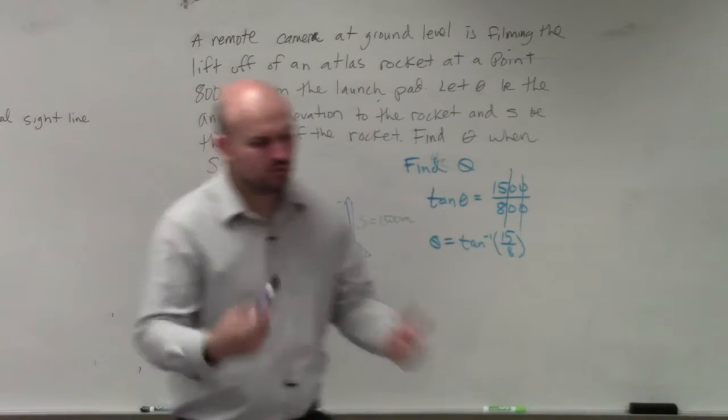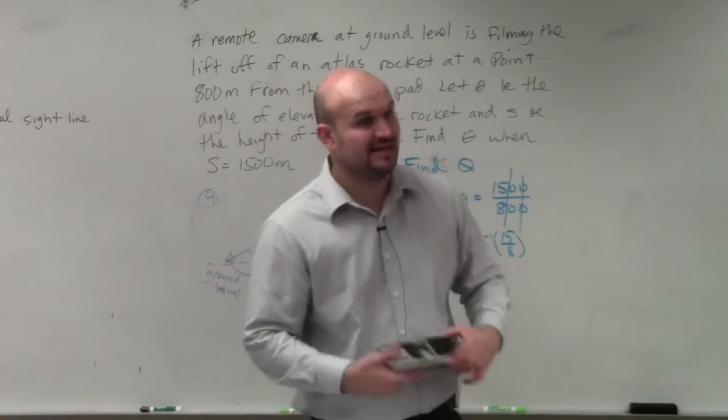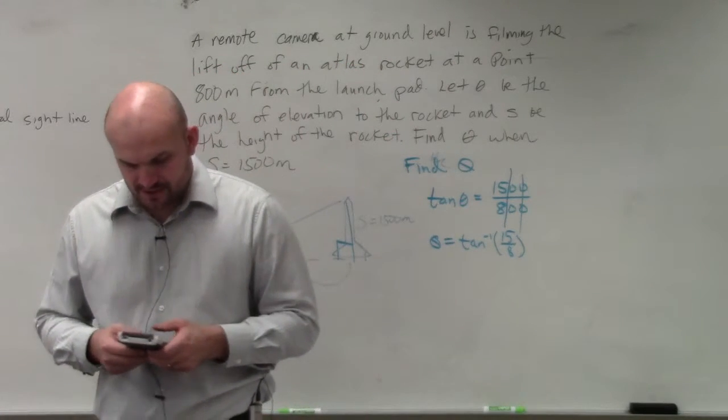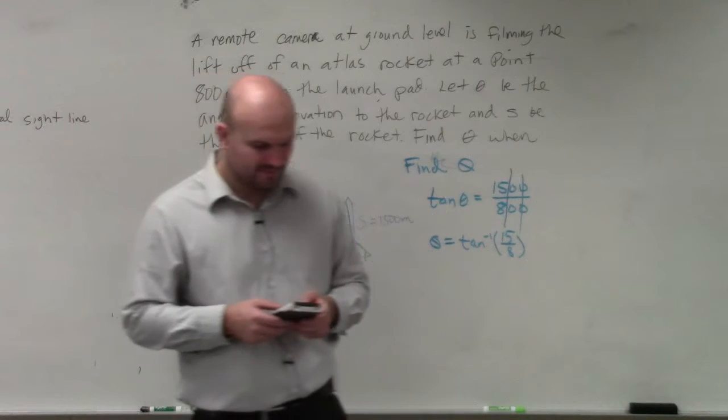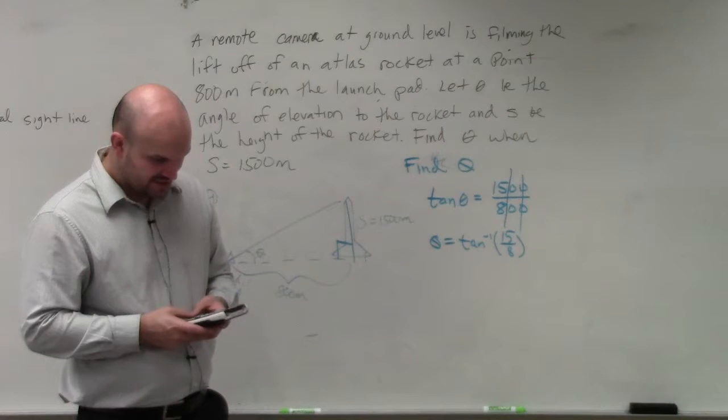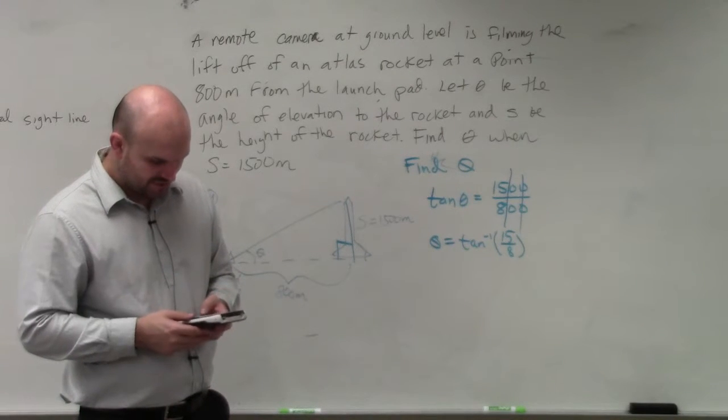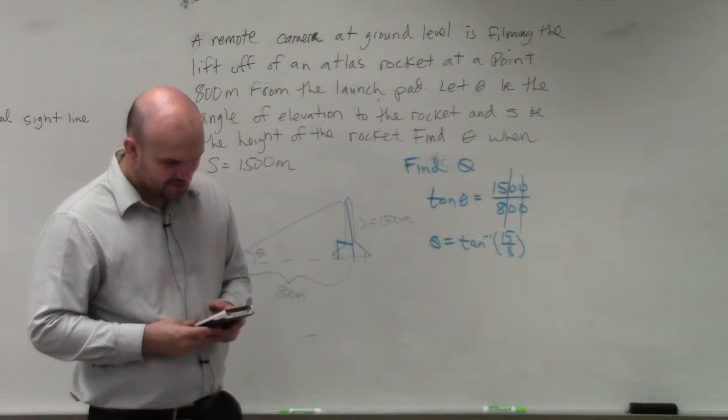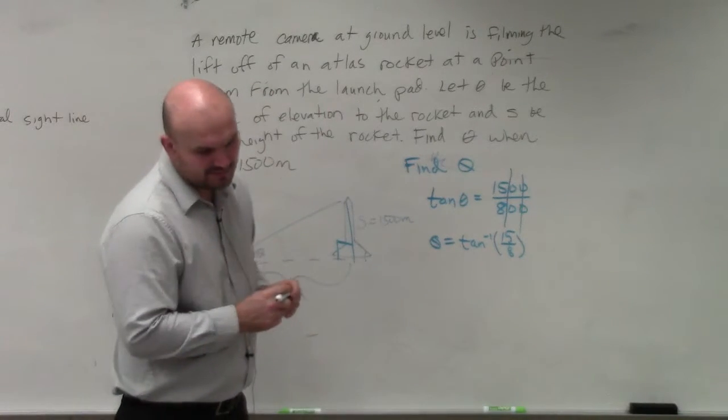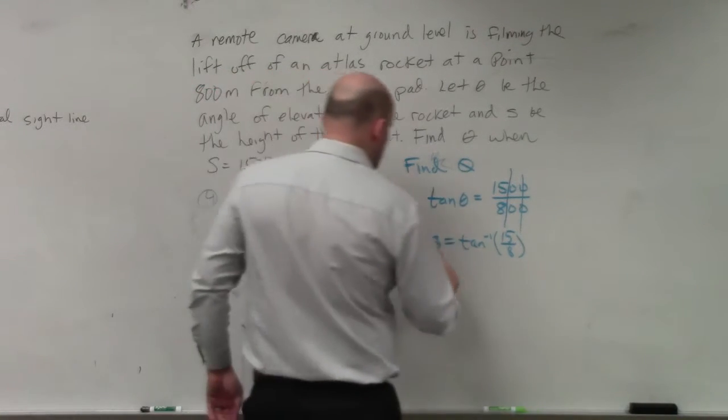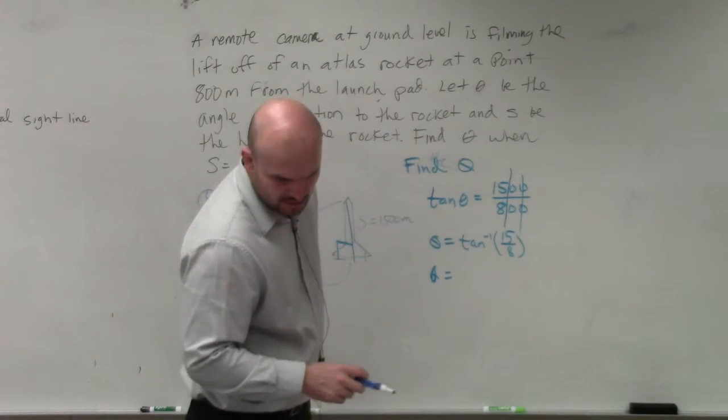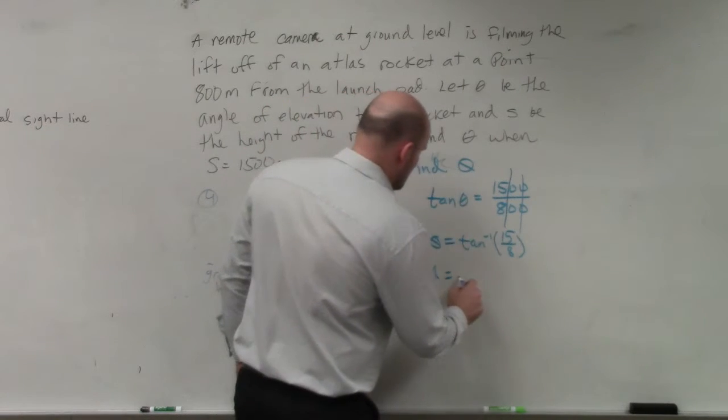Now, when we're doing word problems, unless it's asking you to do it in radians, we are going to want our word problems to be in degrees. So I make sure my calculator is in degree mode, and then I simply do second tangent. That gives me tangent inverse of 15 divided by 8, and I get approximately 61.927. We're going to round that to the thousandth, so theta equals 61.927 degrees.